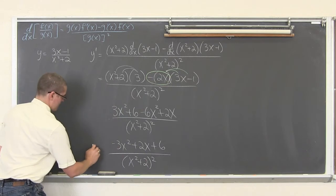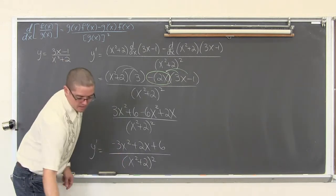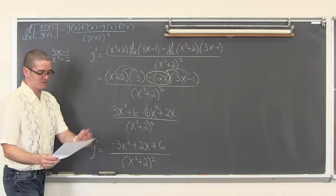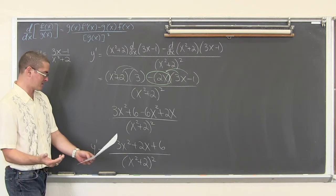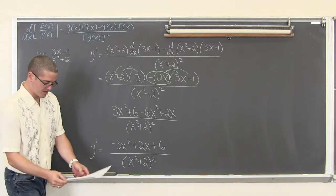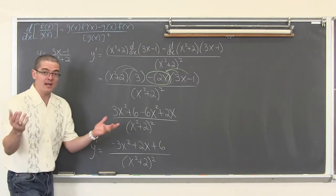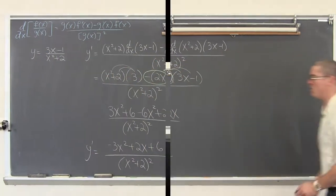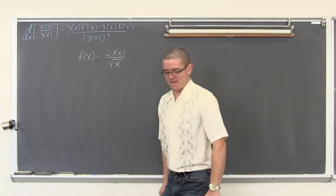We have some like terms. 3 minus 6 is of course negative 3. So we get negative 3x squared plus 2x plus 6, all over x squared plus 2 squared. I always check my work — just make sure: negative 3x squared plus 2x plus 6 over x squared plus 2 squared. Great! Next example!